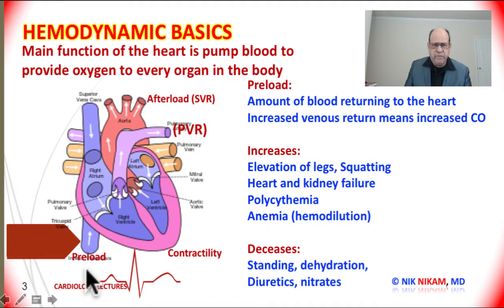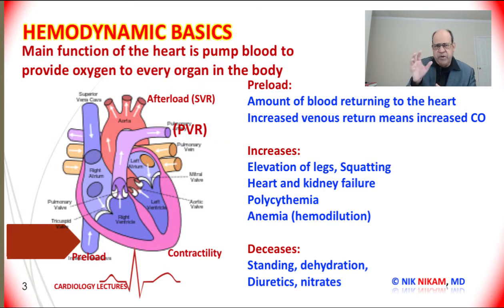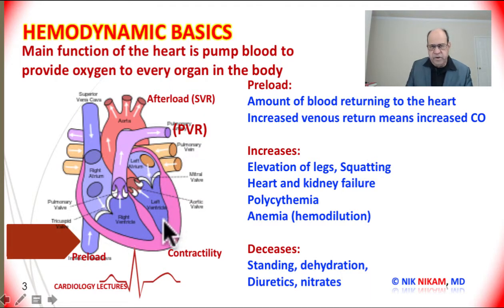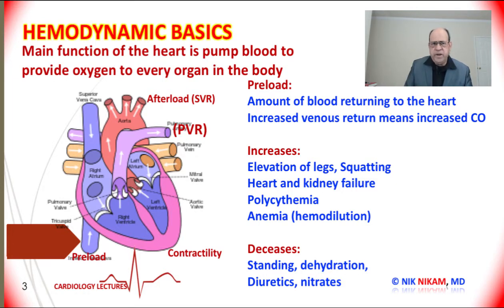Now let us talk about preload. What is preload? Preload is the amount of blood returning to the left ventricle before the ventricle begins to contract. It is the venous return coming from the upper part of the body through the superior vena cava, and from the lower part of the body through the inferior vena cava, which is eventually pumped through the right heart into the pulmonary artery, into the left atrium, and finally reaches the left ventricle. The greater the preload, the greater the cardiac output; if we decrease the preload, we decrease the cardiac output.